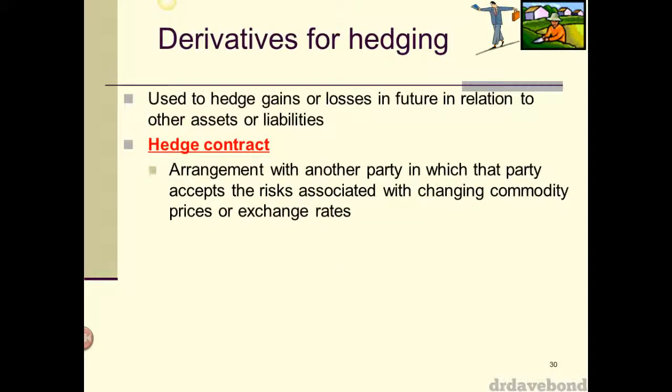Hedging is about gaining some surety — you're not trying to necessarily make money or lose money, you're trying to lock in a price. A hedge contract is an arrangement with another party to accept those risks, and that may be somebody else's risk that they're willing to accept.